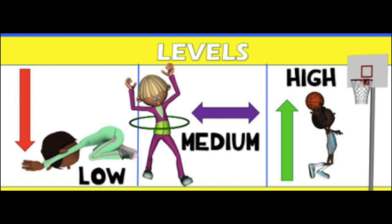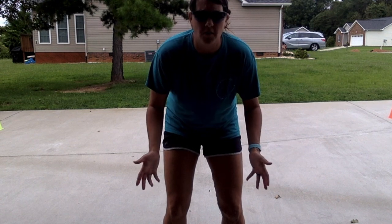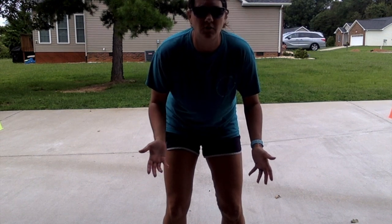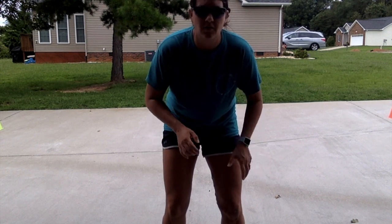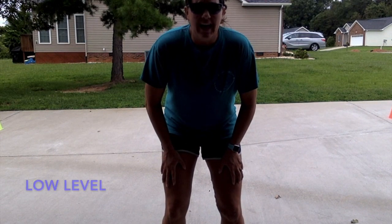The three levels that we're going to move at are a low level, a medium level, and a high level. Now we're going to move in different levels still using those locomotor skills that we have learned. We can even throw in some pathways to review what we learned. The first level we're going to move in is a low level.